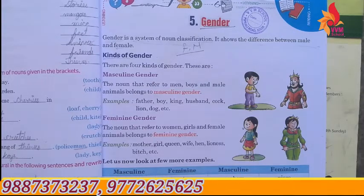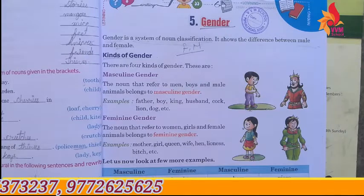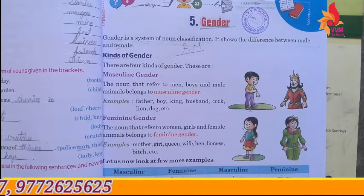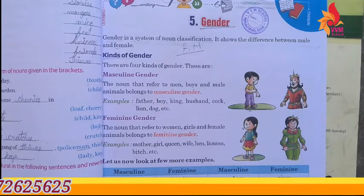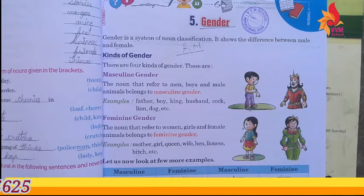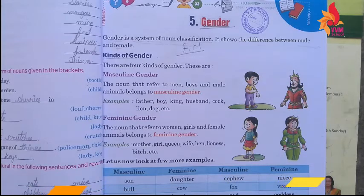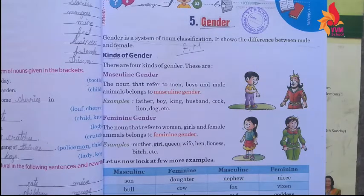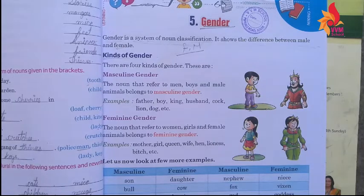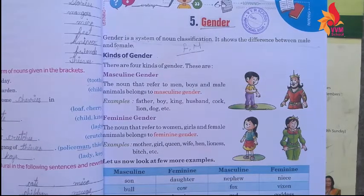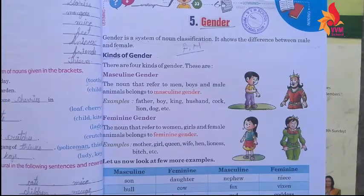Masculine gender refers to male nouns. Feminine gender refers to female nouns. Common gender includes nouns that can be both male or female — for example, doctor or teacher, since both can be male or female.